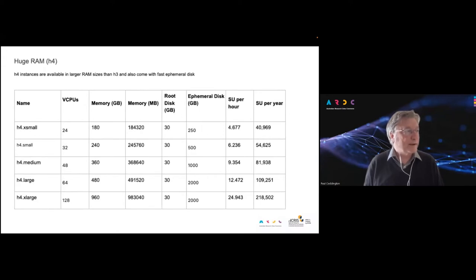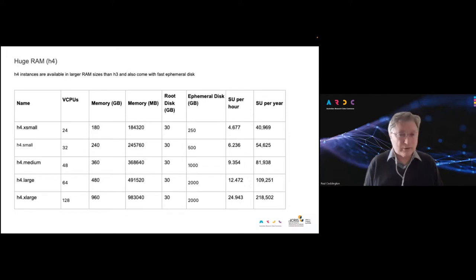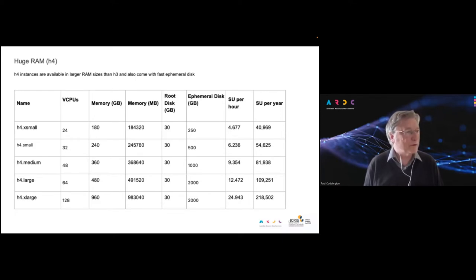Finally, the huge RAM flavors — the H4 class — go up to 480 and 960 GB, so almost a terabyte of RAM per virtual machine. They have 128 virtual CPUs and two terabytes of fast NVMe ephemeral disk. That's a pretty substantial virtual machine.